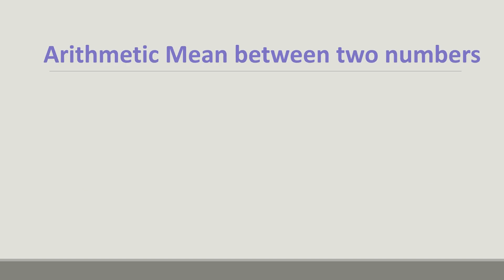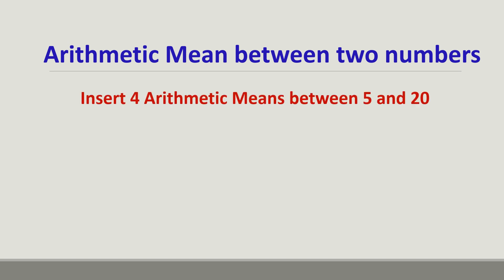Now, let us insert arithmetic means between two numbers. We can insert any number of arithmetic means between two numbers in arithmetic progression. We have to insert four arithmetic means between 5 and 20 such that they are in arithmetic progression. The difference between all these numbers should be the same — there must be a common difference. If we insert four numbers between 5 and 20, there will be altogether six terms in the progression.